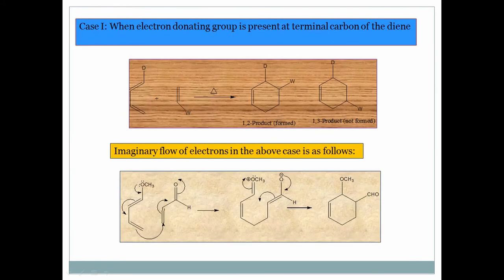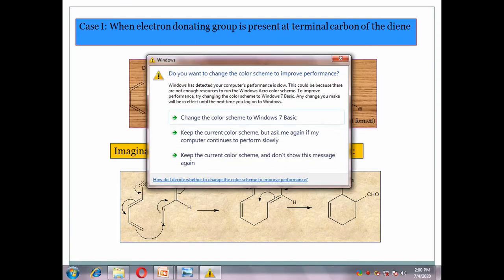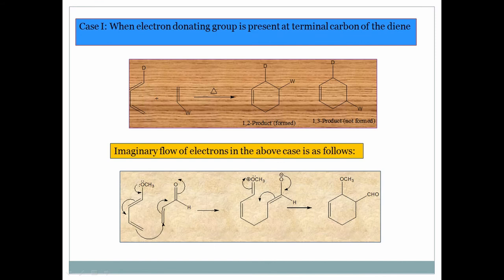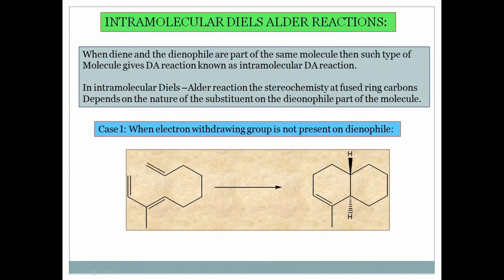In case two, when the electron-donating group is at the first (terminal) carbon of the diene, the 1,2-product (ortho product) is formed as the major product and the 1,3-product is not formed. This is also explained by the push-pull mechanism: the methoxy group donates electrons to the beta carbon, and with reverse polarization the reaction gives the 1,2-product as the major product — OCH3 pushes electrons and the dienophile pulls them.